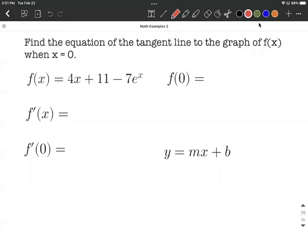Okay, finding the equation of a tangent line to a graph at a given x value. In this example, we have f(x) = 4x + 11 - 7e^x.